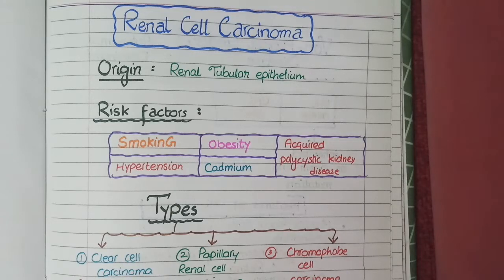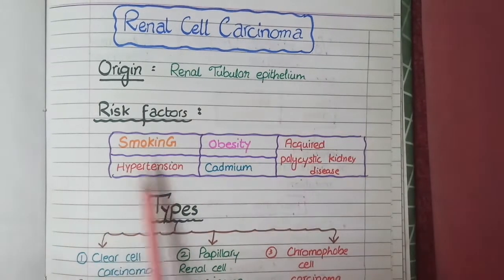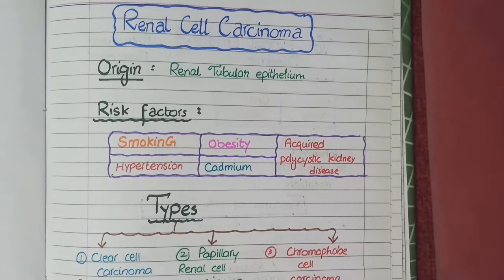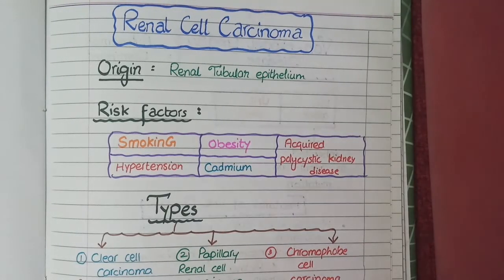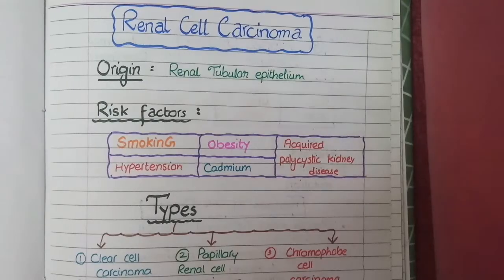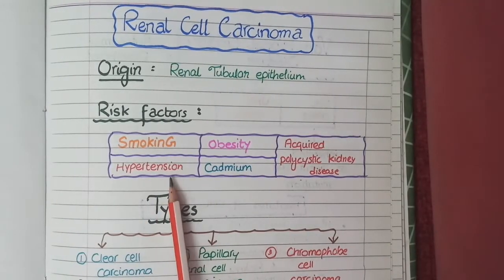The third, very surprising, risk factor for renal cell carcinoma is hypertension. It's quite surprising because hypertension is a vascular disorder, and logically a vascular disorder does not make sense to have association with a neoplastic disorder. But still, this is considered as a risk factor.